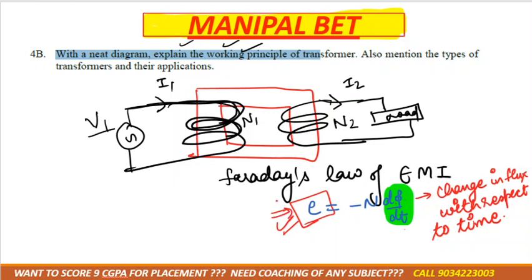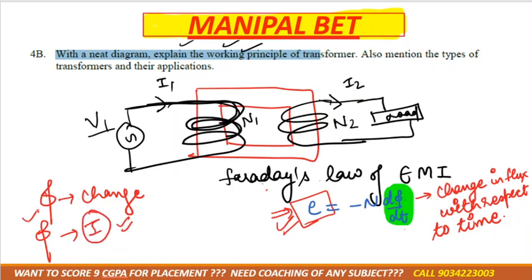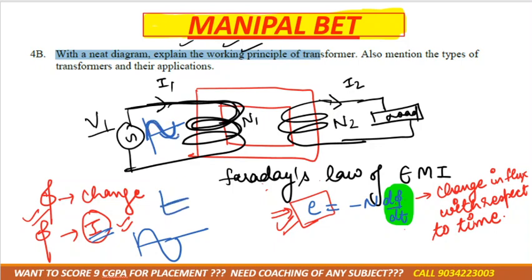You have to remember this formula — it is the main principle, the law of the transformer: Faraday's law of electromagnetic induction. Now the question is: how will the flux change? Flux depends on current. If we change the current — by providing AC supply instead of DC — the current keeps on changing, so flux also keeps on changing, and due to that change in flux with respect to time, EMF is induced.